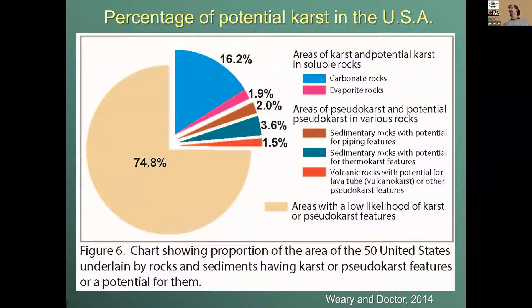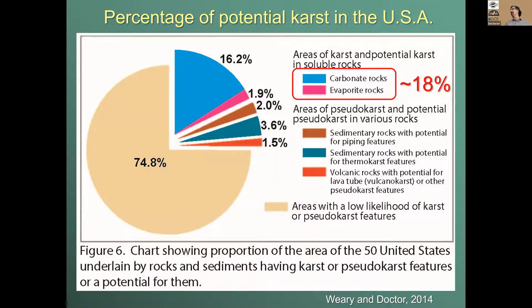If you add up all these areas — carbonate rocks, evaporite rocks, and pseudo-karst — it's about a quarter of the country where you have the ability to have karst landforms near or at the land surface. But for the most part, it's the carbonate rocks and evaporite rocks that form what we call true karst: karst resulting from the solution of the rocks.